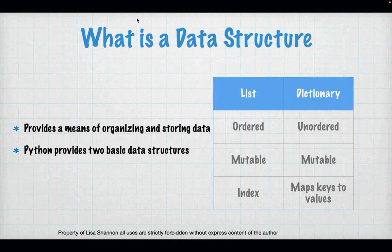In the programming world you're going to use a lot of data structures. Whether that data structure is simple or very complex, flat or nested, you will use data structures all of the time. They're like loops and branches — they are just part and parcel to what we do. So what are these two data structures that Python gives us? There's list and a dictionary.